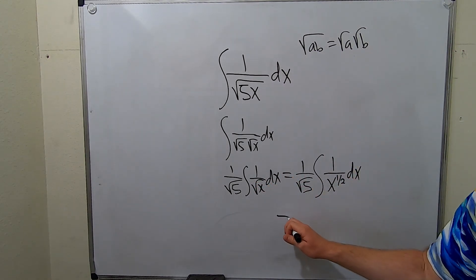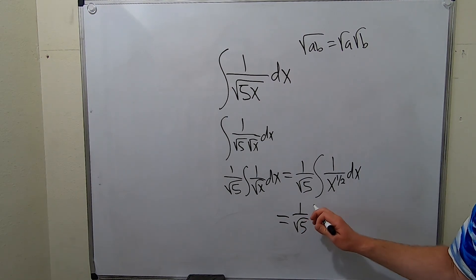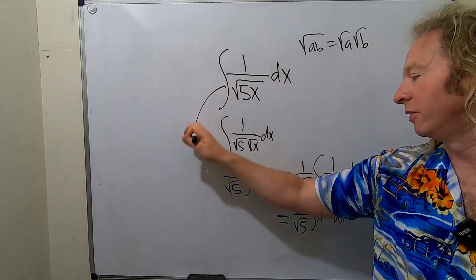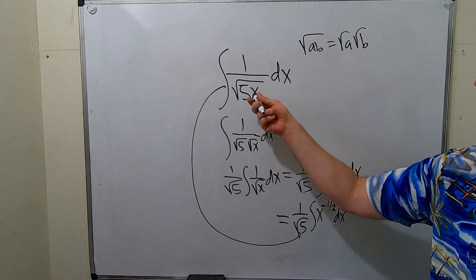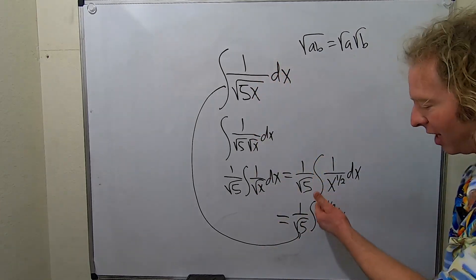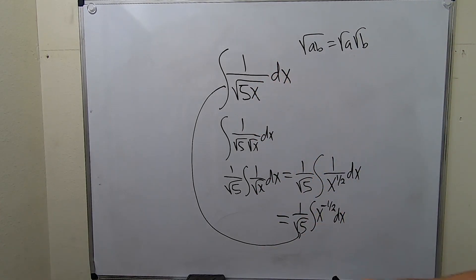Then you can bring it upstairs. So 1 over root 5. And you could skip a lot of these steps. If I wasn't making a video, I probably would have gone from here to here. You can do that, right? Because you can think of this as x to the 1 half and you bring it up and it becomes negative. So you're allowed to skip steps.